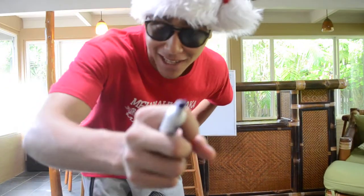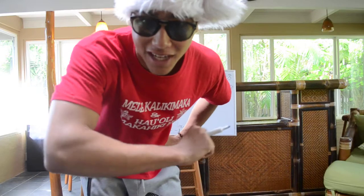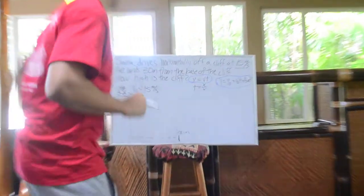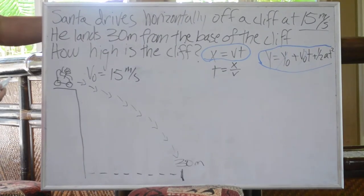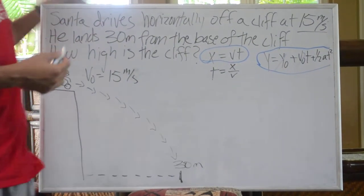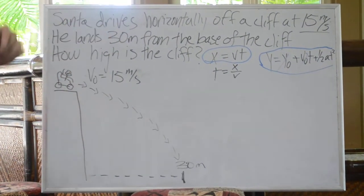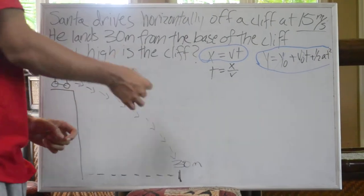Hi everybody, this is Santa Claus speaking, and this year in your stocking will be a physics problem. Santa drives horizontally off a cliff at 15 meters per second. He lands 30 meters from the base of that cliff. How high is the cliff?